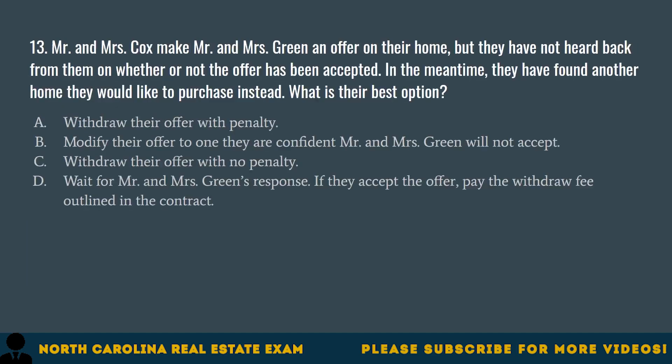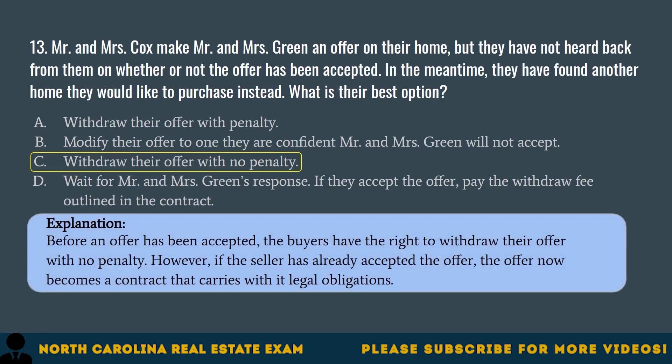Question 13. Mr. and Mrs. Cox make Mr. and Mrs. Green an offer on their home, but they have not heard back from them on whether or not the offer has been accepted. In the meantime, they have found another home they would like to purchase instead. What is their best option? A. Withdraw their offer with penalty. B. Modify their offer to one they are confident Mr. and Mrs. Green will not accept. C. Withdraw their offer with no penalty. D. Wait for Mr. and Mrs. Green's response; if they accept the offer, pay the withdrawal fee outlined in the contract. The correct answer is C. Withdraw their offer with no penalty. Before an offer has been accepted, the buyers have the right to withdraw their offer with no penalty. However, if the seller has already accepted the offer, the offer now becomes a contract that carries with it legal obligations.